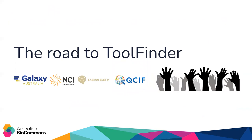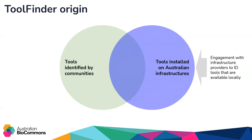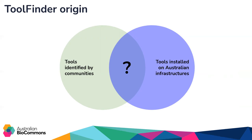This brings us to the road we took to reach Tool Finder. We had a demonstrable need from community requirements around transparency, but what we also found was that when we were engaging with communities we could identify tools of importance or relevance to those communities, and we could do something very similar for our partner infrastructures. In both cases we could identify tools that were of interest, or in the case of partner infrastructures, were actually installed and available to use — but there was no way to articulate these observations and provide this information back to the community in a digestible and meaningful way.